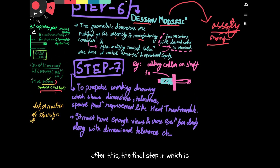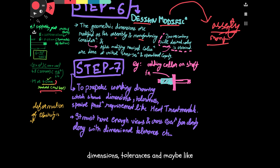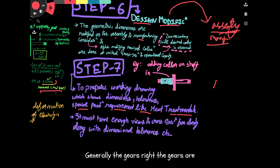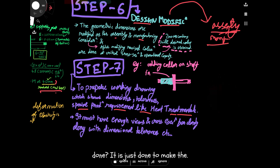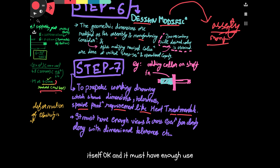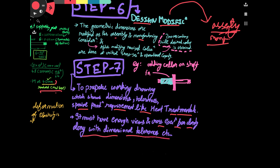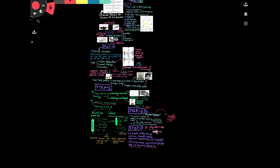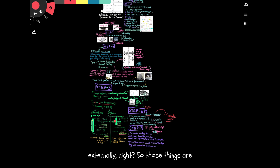Step number seven involves making a working drawing that shows all the dimensions, tolerances, and special production requirements such as heat treatment. For example, gears are surface heat-treated for hardening to make the gear surface more wear-resistant. The drawing must have enough views and cross-sections for clarity, along with dimensional tolerances, to help fabricate the component externally.